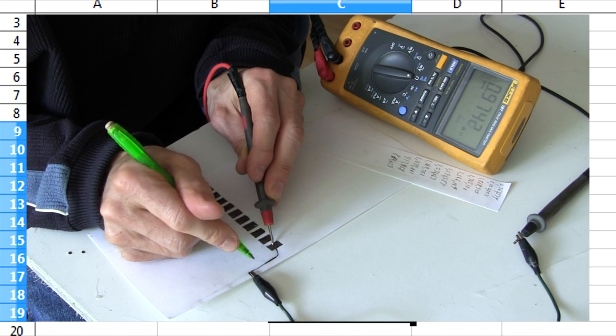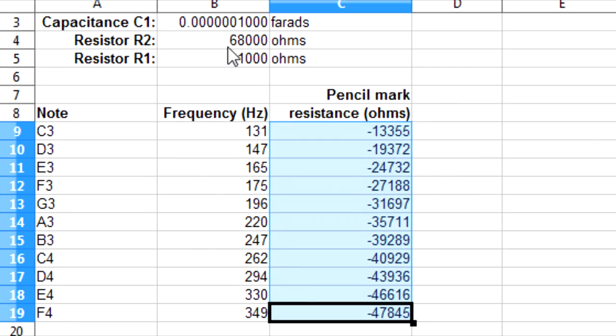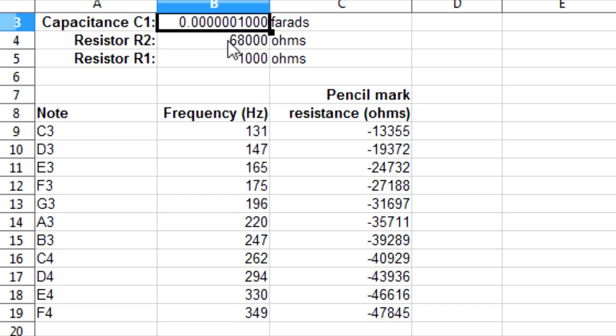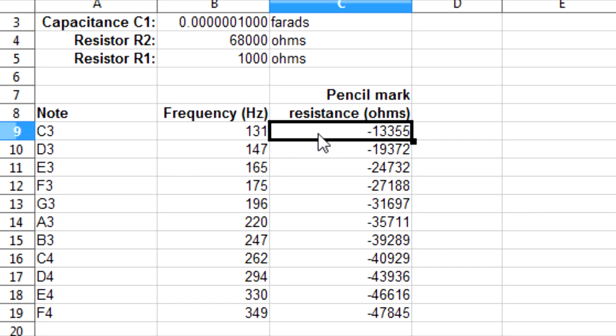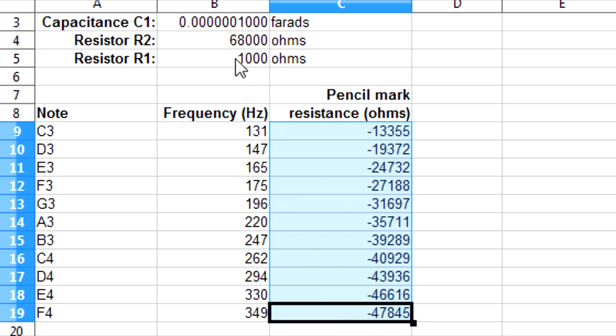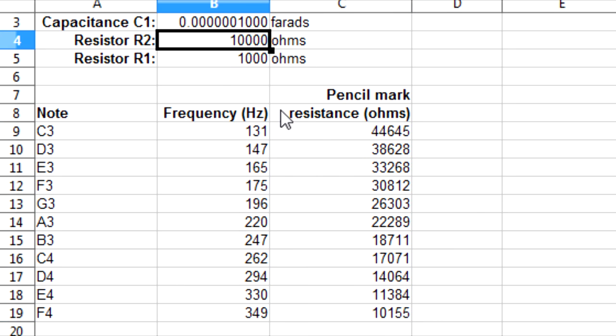Just to be clear, those resistances are what's needed from the alligator clip to the playing wire. At the top here are the capacitance for the capacitor C1 and the resistance for resistor R2. These are what I used in the formula. They're there so we can easily try different values. The negative resistance values just means that R2 is too big. If I make R2 10 kilo ohms instead, for example, then the numbers become positive.